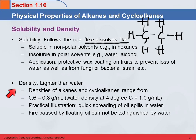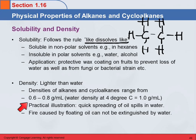Density. Alkanes are less dense than water. The densities of alkanes and cycloalkanes are approximately 0.6 to 0.8 grams per milliliter, and water is about 1 gram per milliliter. So if you have these two things together, the alkanes are going to float on the water. You can remember that by thinking of oil — oil contains a lot of alkanes, and the oil floats on the water.